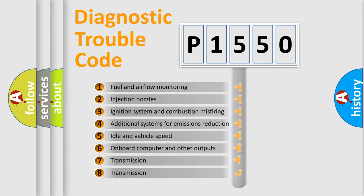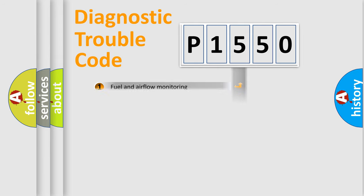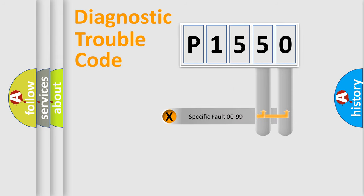The third character specifies a subset of errors. The distribution shown is valid only for the standardized DTC code. Only the last two characters define the specific fault of the group.